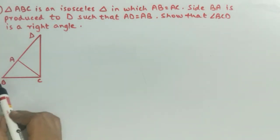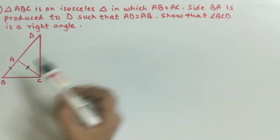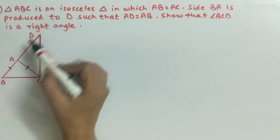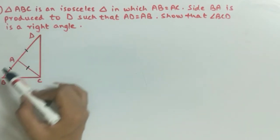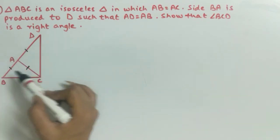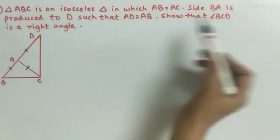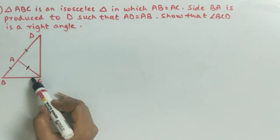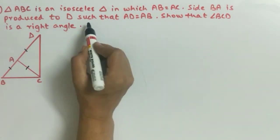इस question में हमें figure given है — यह है triangle ABC, जो एक isosceles triangle है, और इसमें AB side, AC के equal है। आगे question में वो कहते हैं कि BA side को उन्होंने आगे produce किया D point तक, इस तरह से कि जो यह AD है, यह equal है AB के। तो AB, AC और AD — यह तीनों line segments आपस में equal हैं। यह data हमें question में given है। और हमें proof क्या करना है? Show that angle BCD is a right angle — यह वाला angle हमारा BCD, यह हमें 90 degree proof करना है।